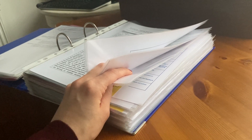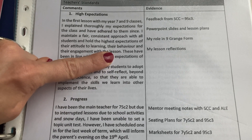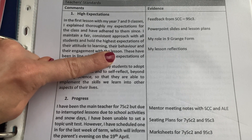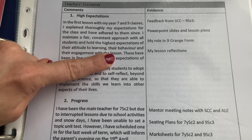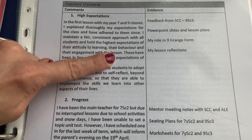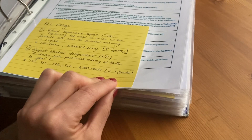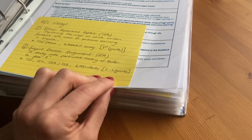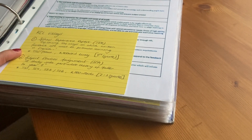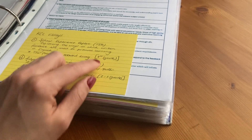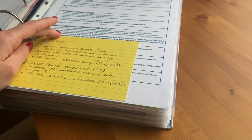I'll zoom in now to show you a little bit of that. For each of the teaching standards I wrote a little paragraph and then wrote down the evidence. I completed this for all eight teaching standards and sent it to my mentor before she completed the formal report. I also have a printed reflection of my essays — I've written on an index card the two essays I did, what the titles were, what I achieved, and then I've printed one of the proformas we had to fill out for both of those essays.